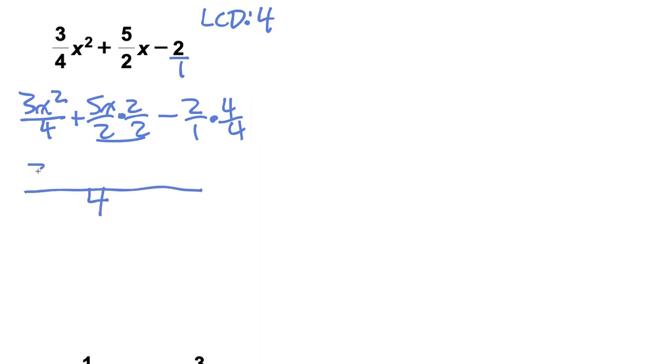We have 4 as that denominator for this mega fraction, so it's going to be 3x squared plus 5x times 2, that's 10x, and then negative 2 times 4, that's negative 8. Then you know the next step, we're going to factor out that one-fourth.